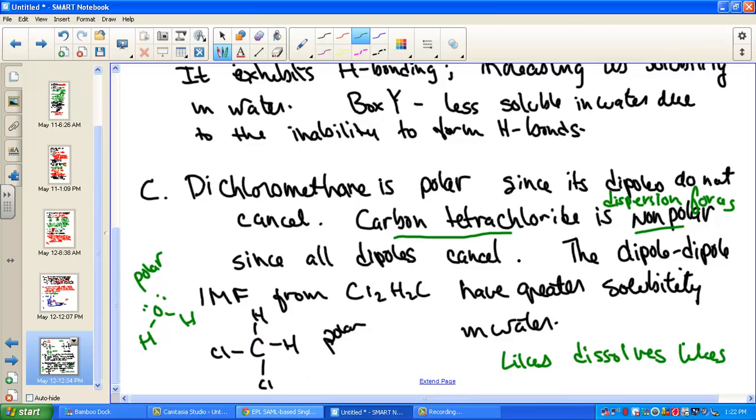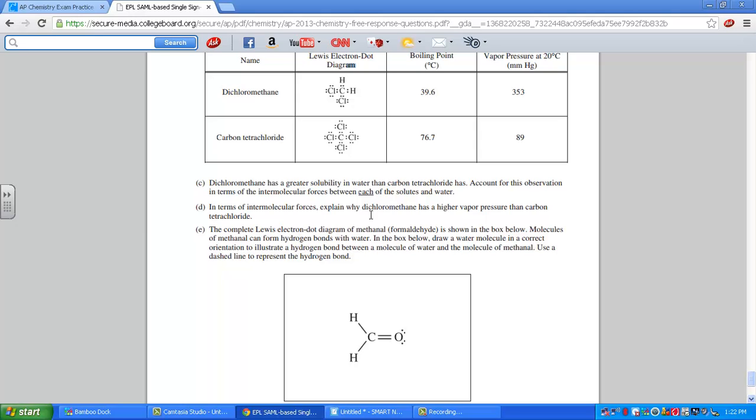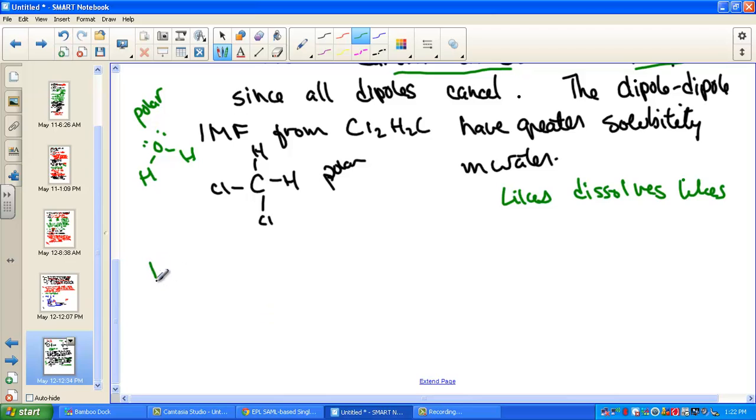In terms of intermolecular forces, Part D is asking us, explain why dichloromethane has a higher vapor pressure than carbon tetrachloride. Again, this is just going to be commenting on the stronger intermolecular attractions. It's going to take more energy to separate the molecules. So dichloromethane, this structure right up here, dichloromethane, it has dipole-dipole attractions. Polar to polar, dipole-dipole.